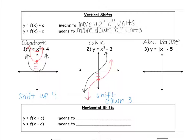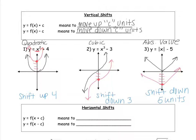Let's try number three on our own — pause the video and hit resume when you've done so. You first needed to draw in your absolute value function, and we're shifting down because it's minus. Shift down five units — go one, two, three, four, five — place the new vertex and draw the absolute value function. That takes care of vertical shifts.